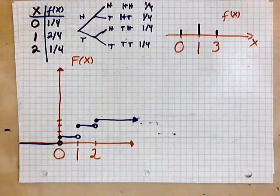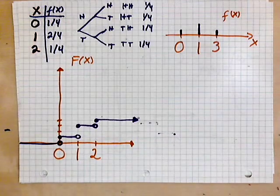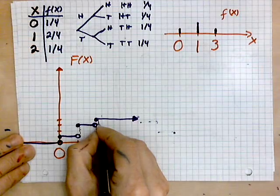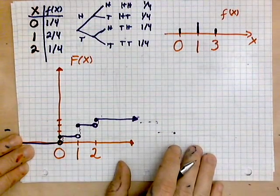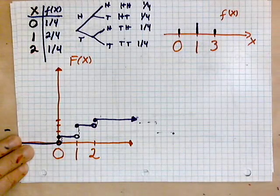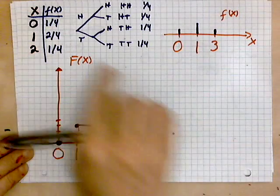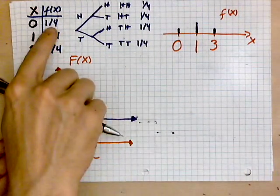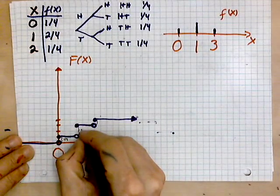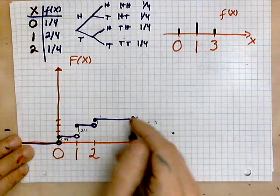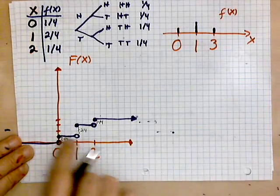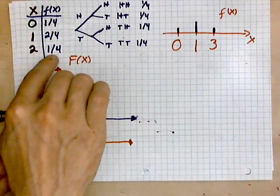And the key point, remember, is at each of these, there's a jump equal to whatever the segment length is that you see here, or that you see in the t-chart. So for example, at zero, there's a jump of one fourth. At one, there's a jump of two over four. And at two, there's a jump of one over four. That's the spacing, the separation between these things. It's equal to whatever probabilities you see here.